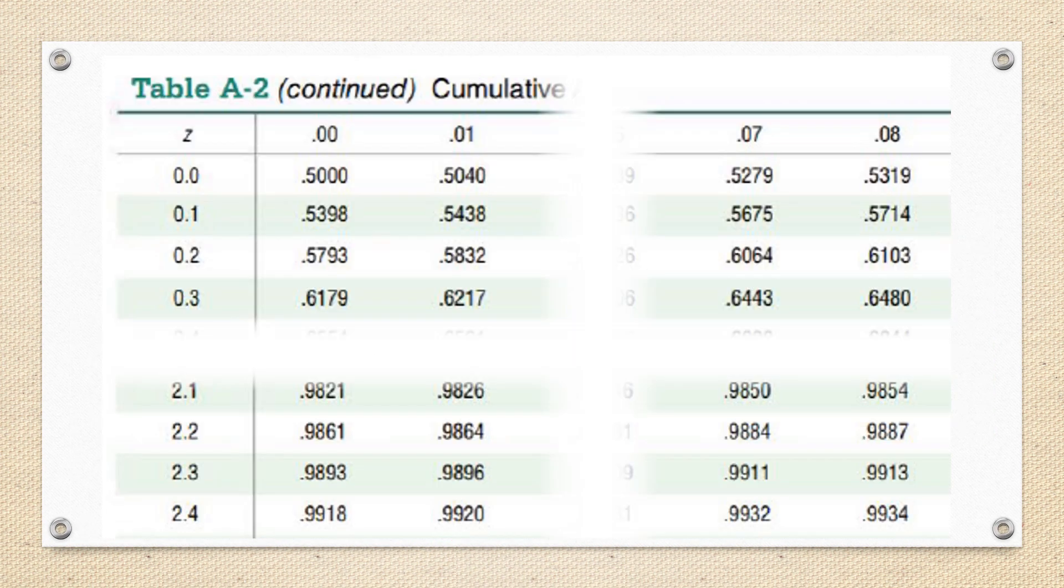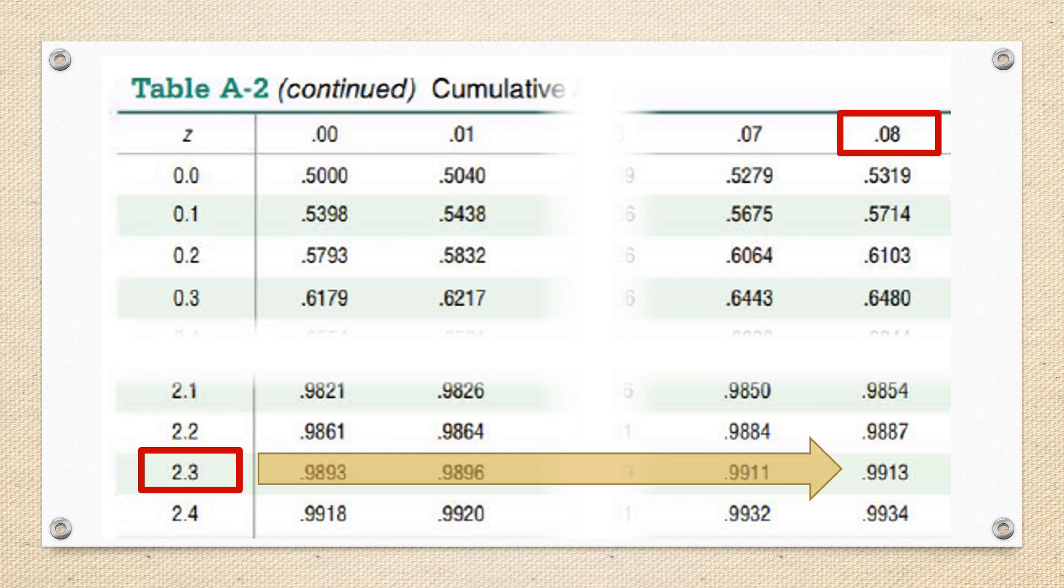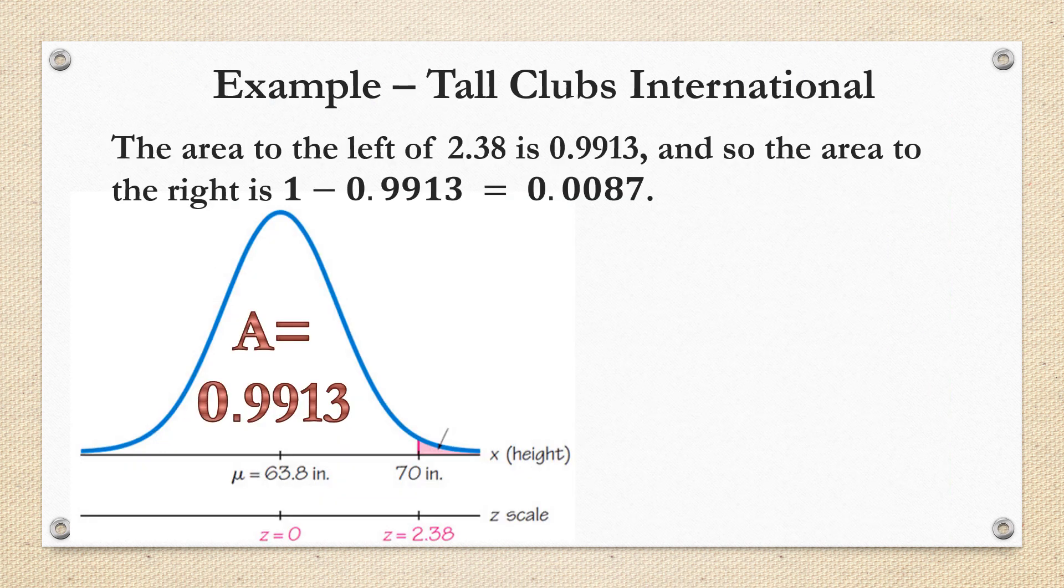Here's an enlarged picture. We're looking for 2.38. On this type of z-table, we have 2.3 on the side column, and we have to look for the 0.08 across the top. Looking across the 2.3 row and down the 0.08 column, we see that we have an area of 0.9913 associated with this z-score. Now that's the area to the left of our data value 70. But we're interested in the area to the right. So we're going to subtract from 1.